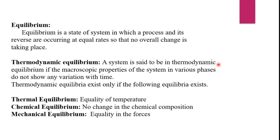Next is equilibrium. Equilibrium is a state of a system in which a process and its reverse are occurring at equal rates so that no overall change takes place. That means the rate of forward reaction is exactly equal to the rate of backward reaction. Therefore, there is no change in the overall process — such a state of a system is known as equilibrium state.